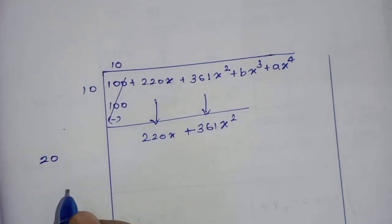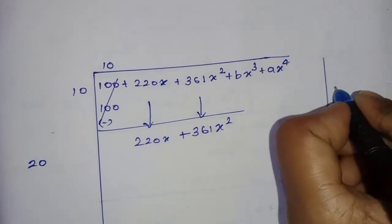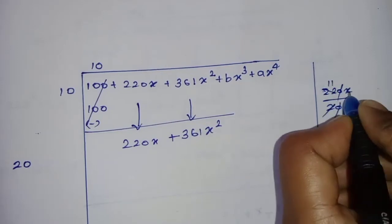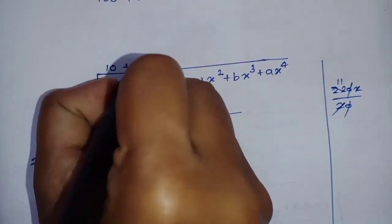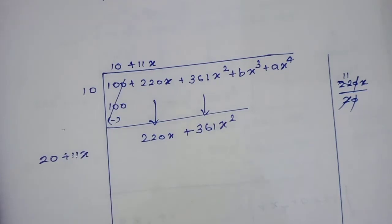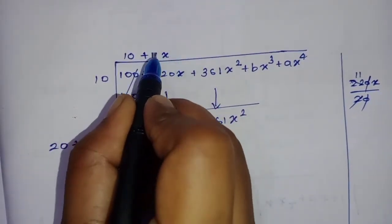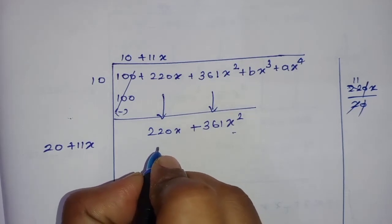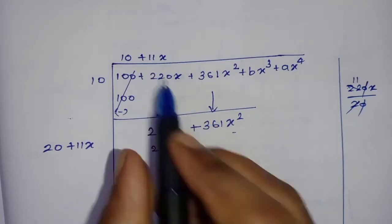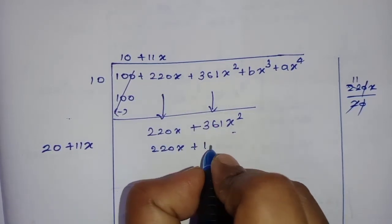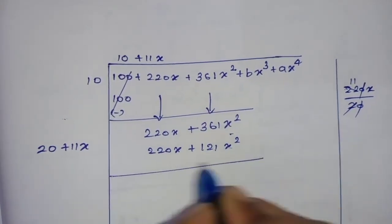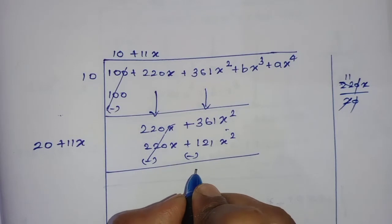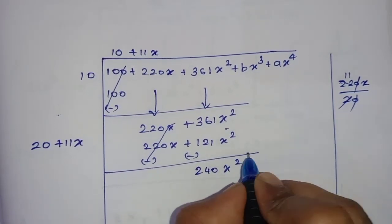Take the square root of 100, which is 10. Multiply 2 by 10 to get 20. Divide 220x by 20 to get 11x. So 11x is the next term. Multiply 11x by 20 to get 220x, and 11x by 11x to get 121x². Change the sign — here minus, here minus — so the first term cancels. These two terms remain along with the remaining polynomial bx³ plus ax⁴.